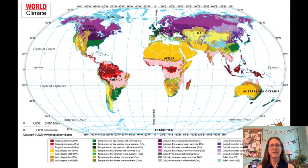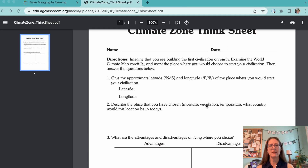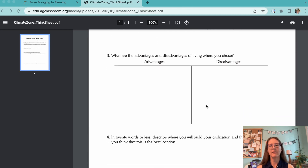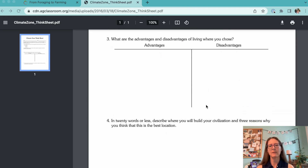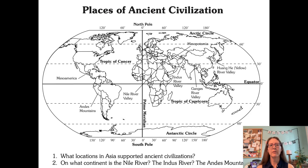The third activity is a mapping lesson that looks at the climate characteristics of different places on earth and challenges students to figure out where they would start farming. There's a nice worksheet to help them explore the advantages and disadvantages of farming in different places. Students can then compare their work to maps anthropologists have created showing where farming likely originated.